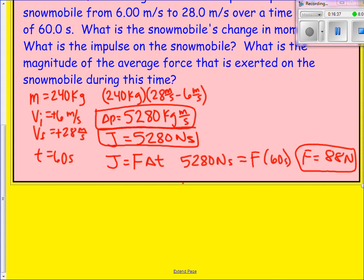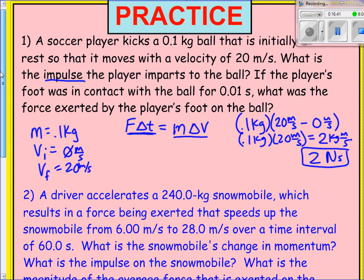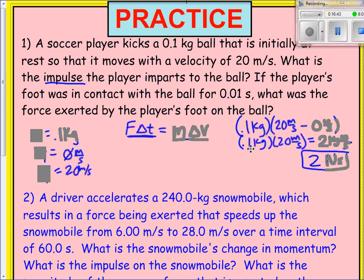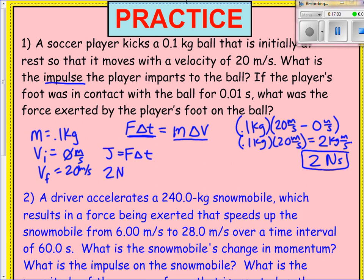Returning to the soccer player problem: if the player's foot was in contact with the ball for 0.01 seconds, what was the force exerted? Impulse equals force times delta T. We found the impulse was 2 Newton seconds, which equals force times 0.01 seconds. Therefore, the force is 200 Newtons.